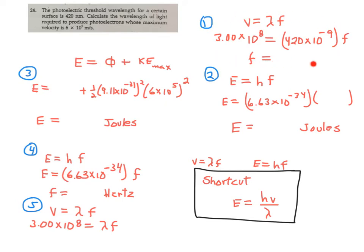If I want to do v equals lambda f, given the wavelength 420 nanometers I can figure out the frequency. Using the frequency we've done it several times now we can get the energy in joules. I'm going to do this entire problem in joules. I think it'll be the fastest way. We don't need to go to electron volts in this problem.